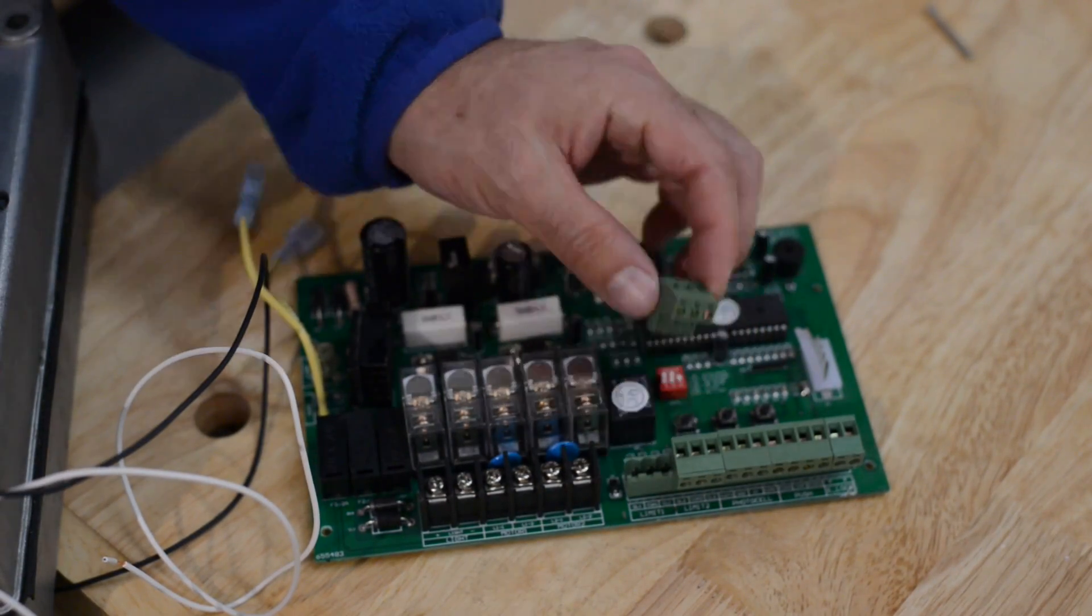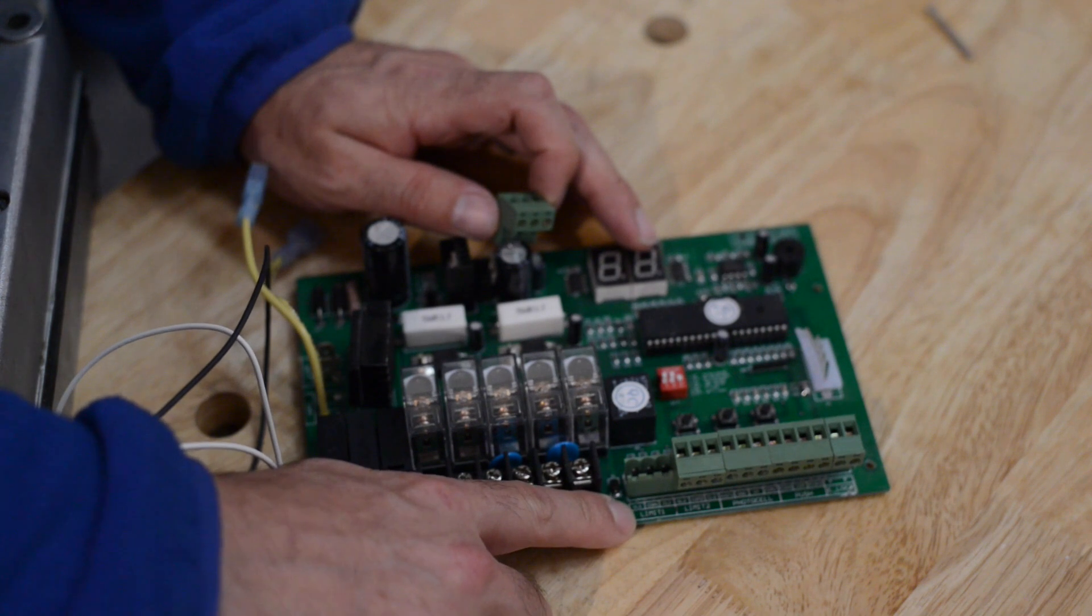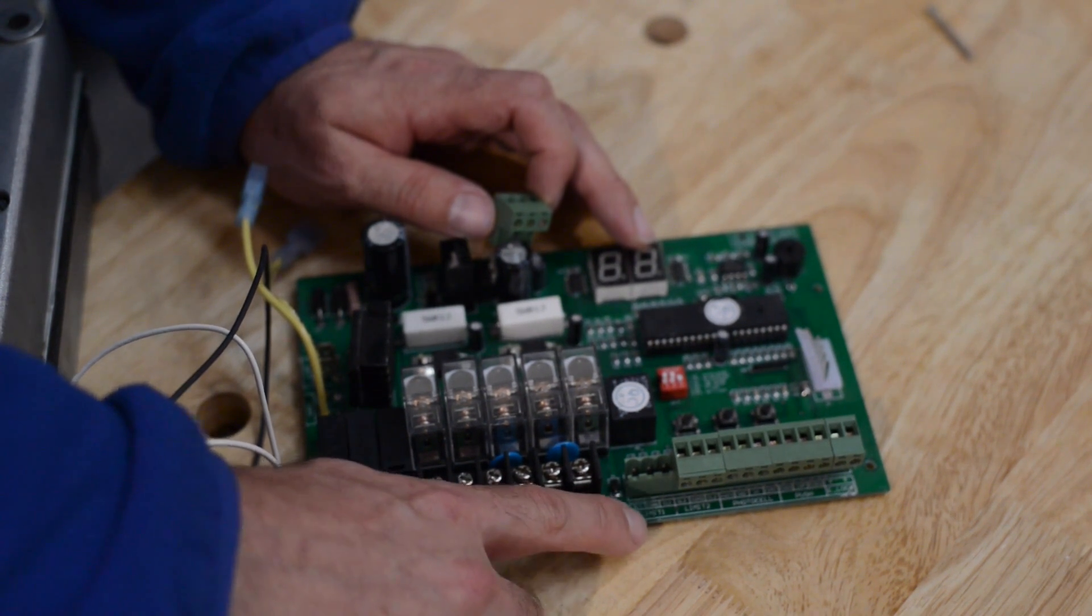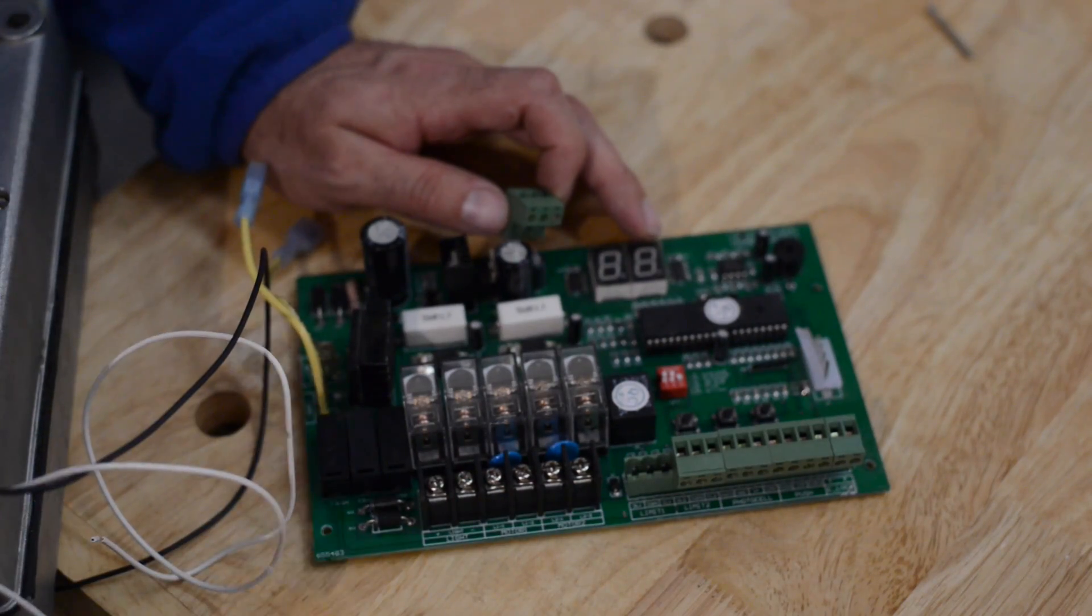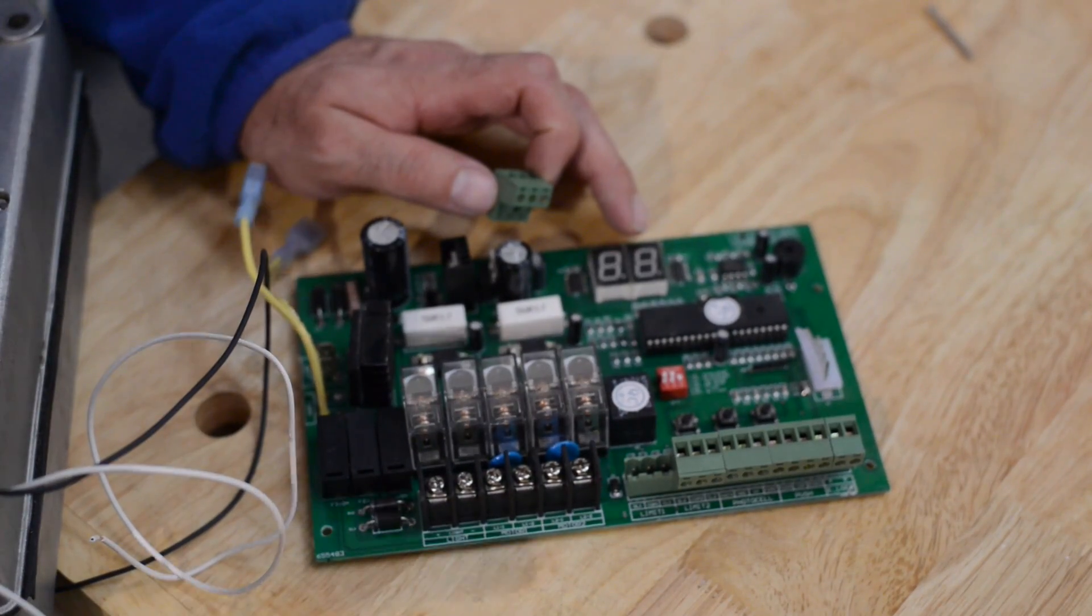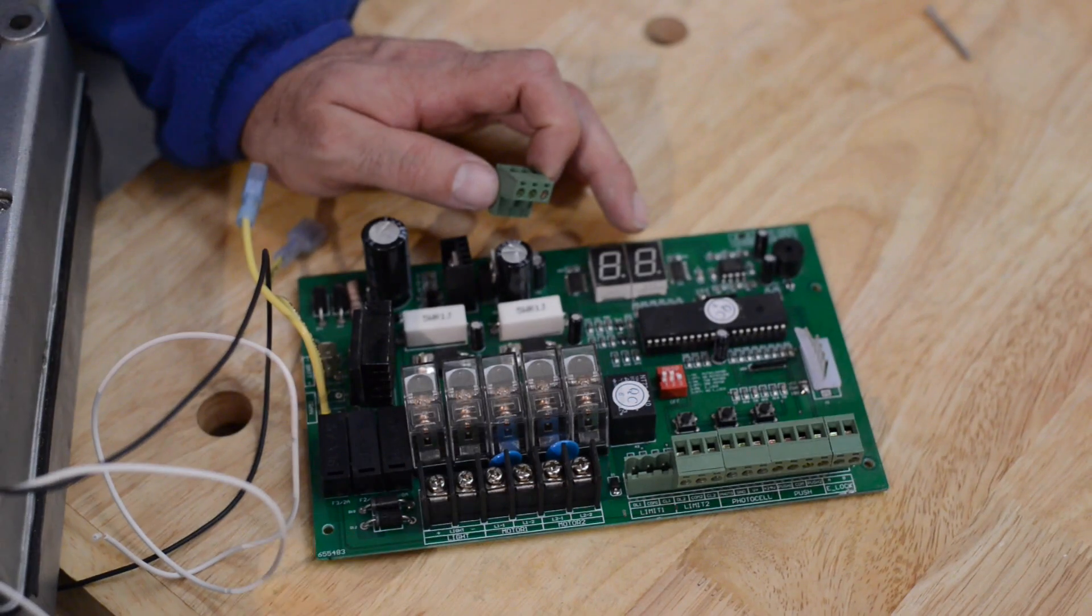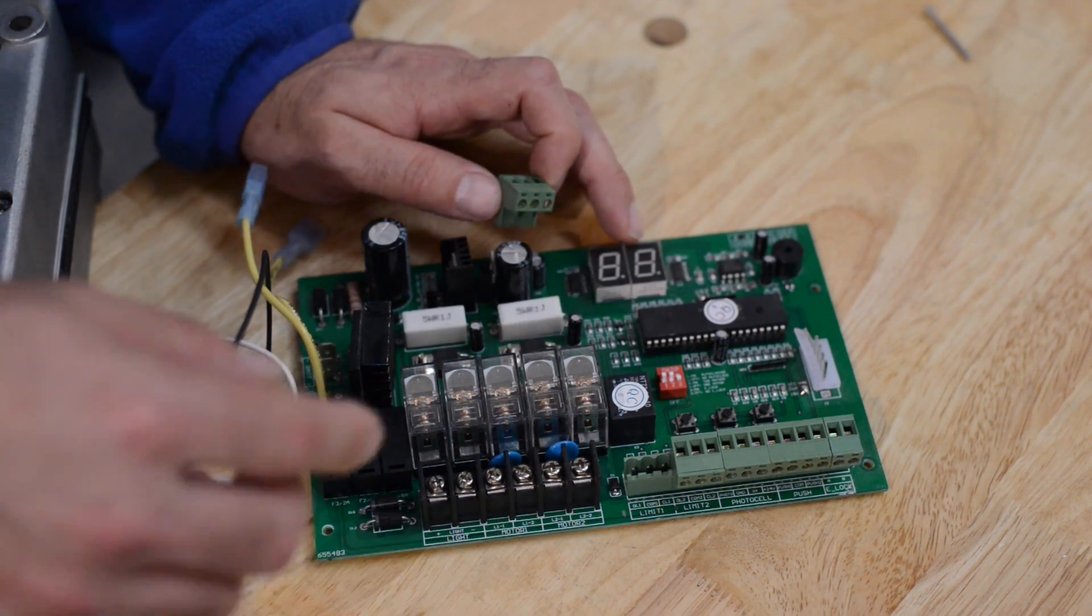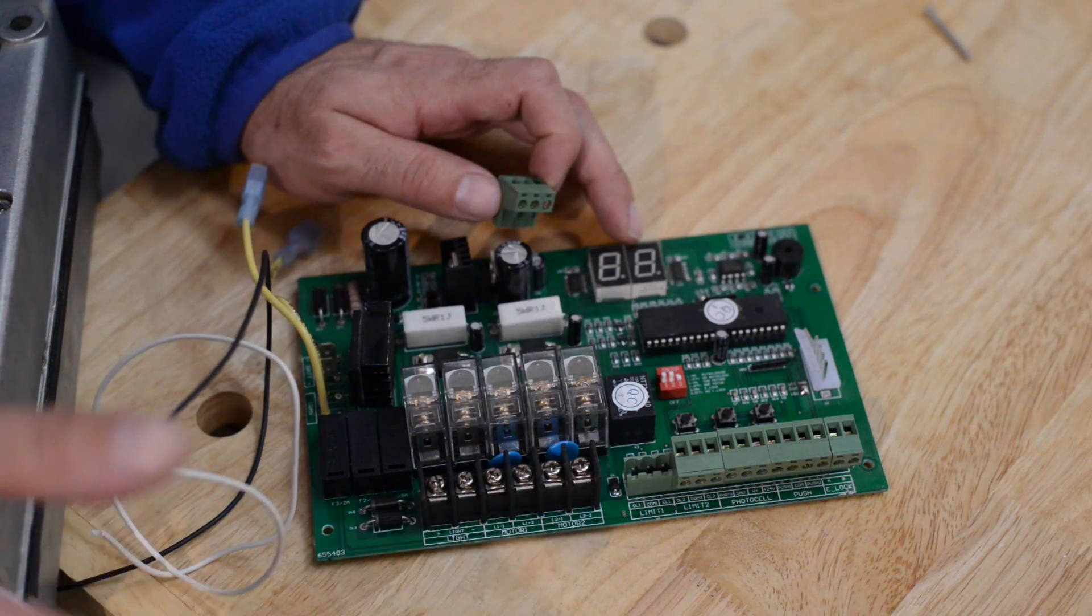This limit switch block pulls off and then you can see some writing underneath here. Notice it says limit one. The one next to it says limit two. Limit one is for the operator that you designate as motor one. There's motor one and limit one. So we are wiring the limits for motor one and limit one.